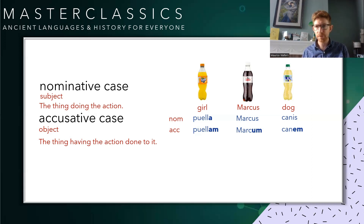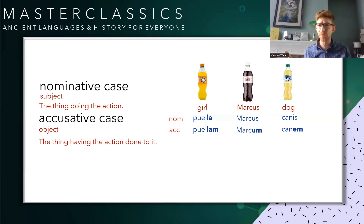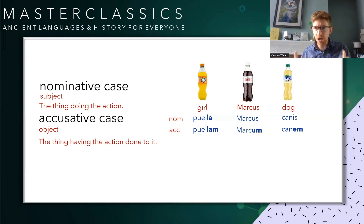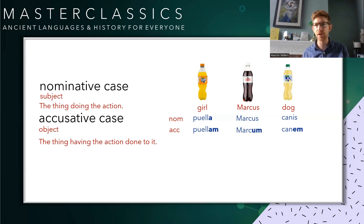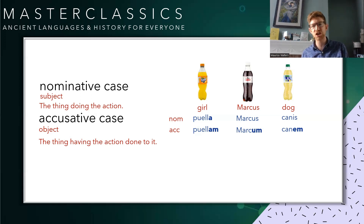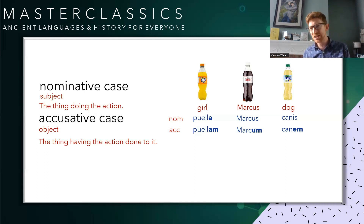For the second declension I chose Diet Coke — pretty common, though if you go to Italy, France, or Spain you can't get one for love nor money; they've all moved on to Coke Zero, which doesn't taste as good. Anyway, Marcus is a second declension noun. It follows second declension endings: marcus with the 'us' ending — which is the ending people associate with Latin — but in the accusative it becomes marcum.